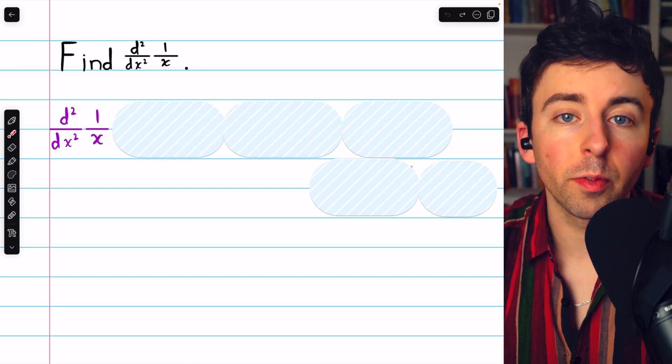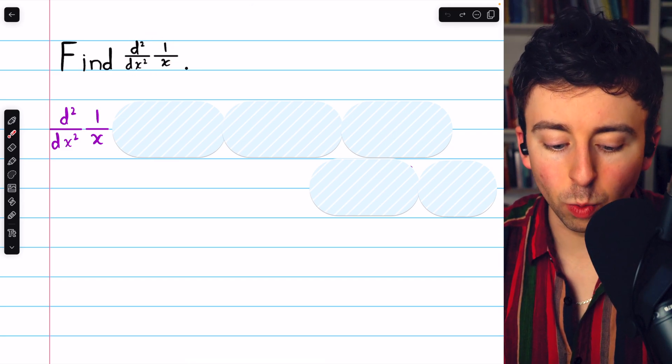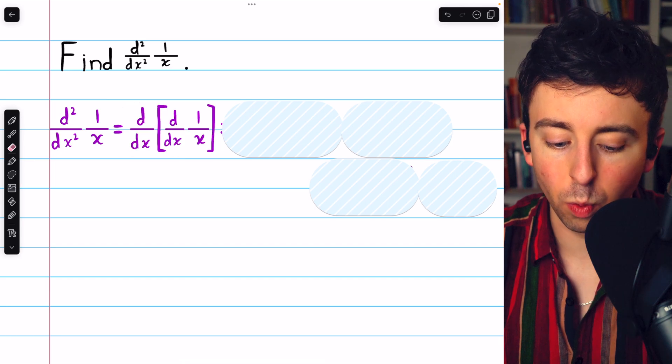To find the second derivative of 1 over x, we need to take the derivative of the derivative of 1 over x.